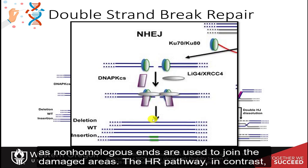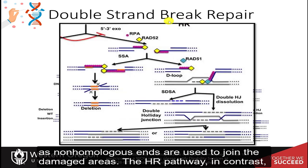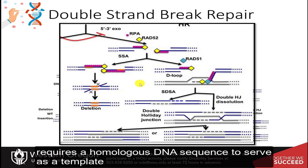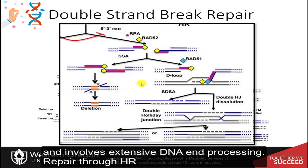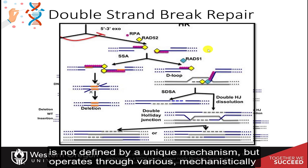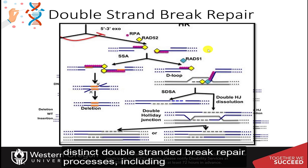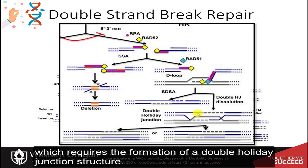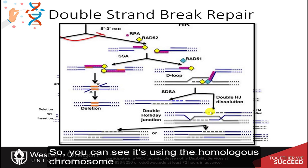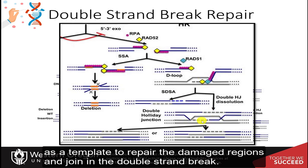The HR pathway, in contrast, requires a homologous DNA sequence to serve as a template for DNA synthesis-dependent repair and involves extensive DNA end processing. Repair through HR is not defined by a unique mechanism, but operates through various mechanistically distinct double-strand break repair processes, including the synthesis-dependent strand annealing mechanism, or SDSA, which requires the formation of a double Holliday junction structure. You can see it is using the homologous chromosome as a template to repair the damaged regions and join the double-strand break.